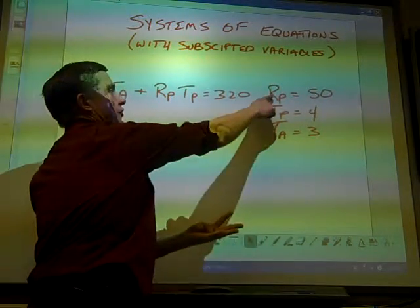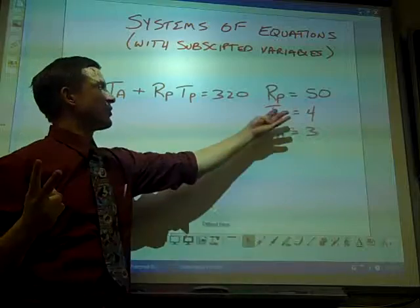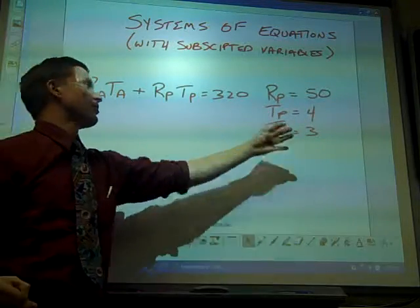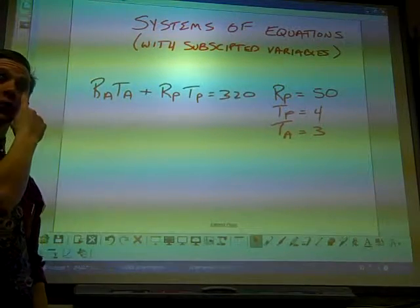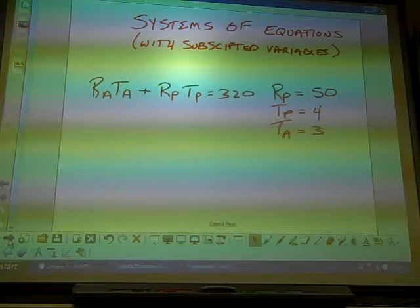I have one equation. Here's R_P again, there's my second equation. Here's T_P, third equation. Here's T_A, fourth equation. Listen, this is solvable because the number of unknowns and the number of equations are the same.